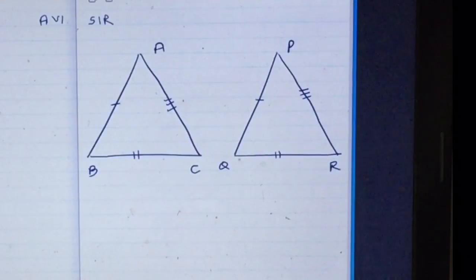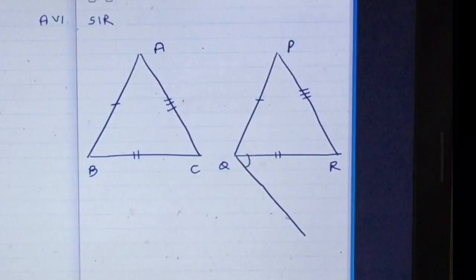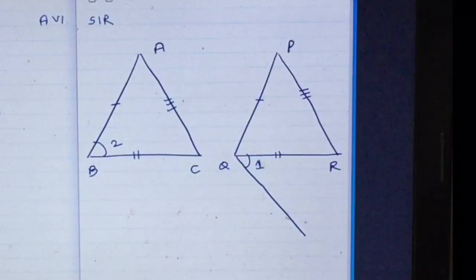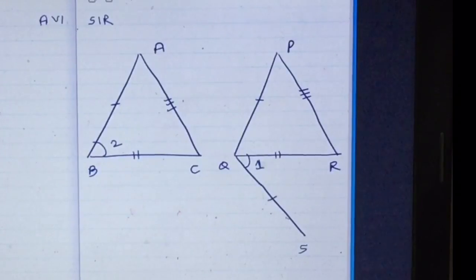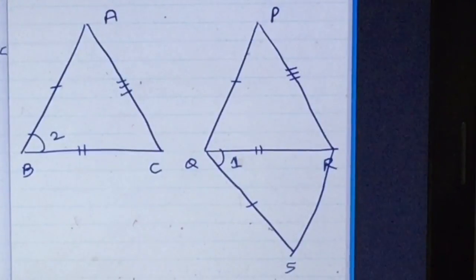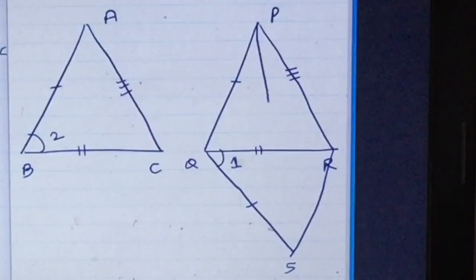We construct an angle RQS such that this angle is equal to angle ABC, and we draw QS equal to AB. Now let us join R to S, and then join P to S.